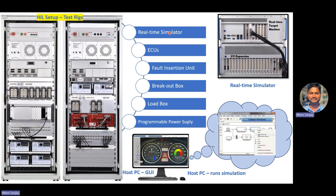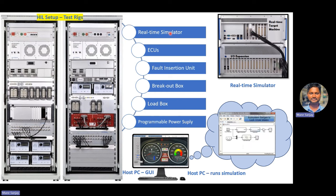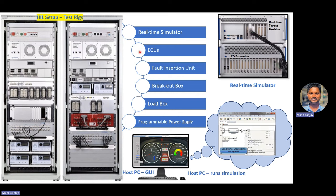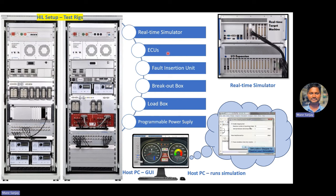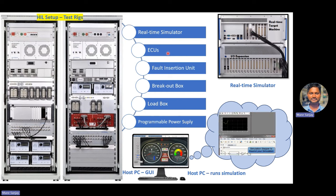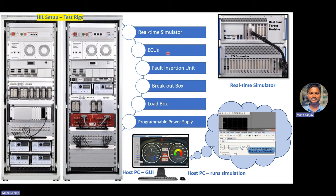When it comes to the actual HIL rig, the first component is the real-time simulator — a very high-complexity processor that simulates your loads, the system, and the inputs and outputs. The real-time simulator is critical for setting up the HIL rig. Another component is the ECU — you actually use the ECU hardware, and you can also simulate loads or use them as actual. That's what hardware-in-loop means: using the actual hardware and looping the environment in simulated form.